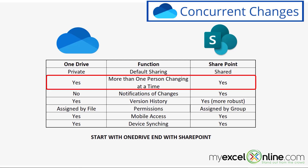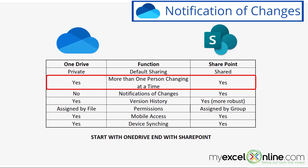Next, let's go over concurrent users. Concurrent users is when you have more than one user in a file at a time. Both OneDrive and SharePoint will let you have more than one user in a file at a time, and you can see those changes being made in real time.